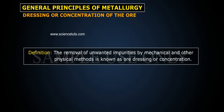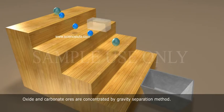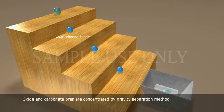These impurities are known as gangue. The removal of unwanted impurities by mechanical and other physical methods is known as ore dressing or concentration. Oxide and carbonate ores are concentrated by gravity separation method.